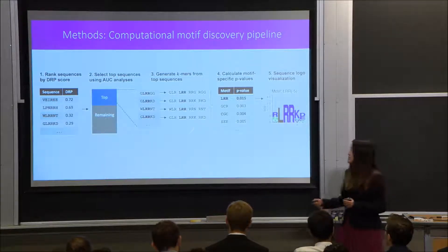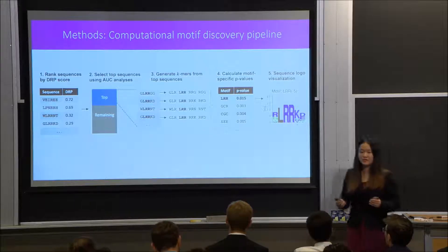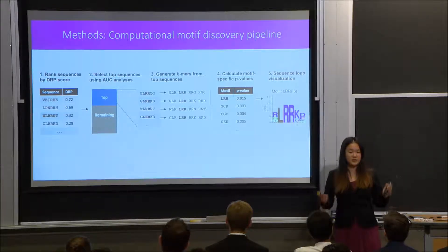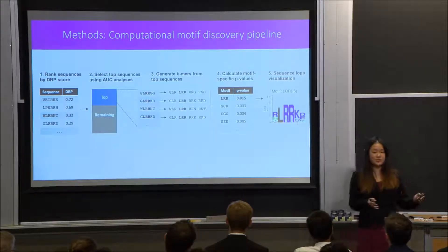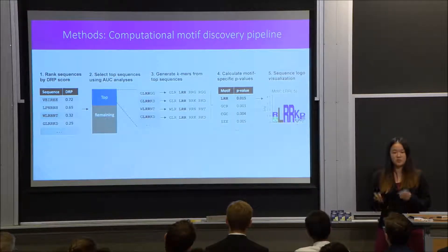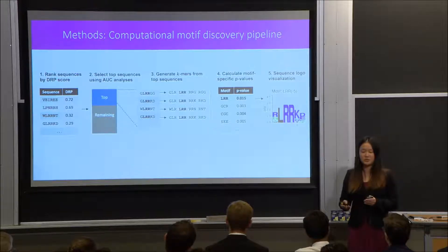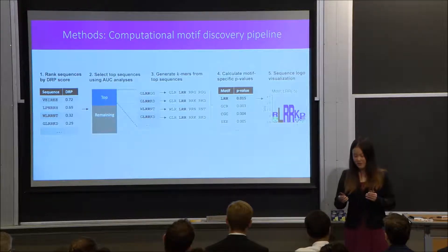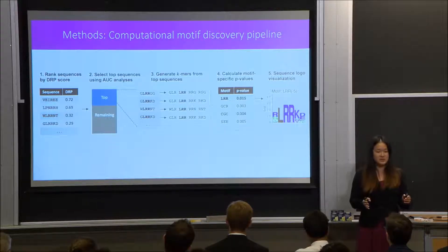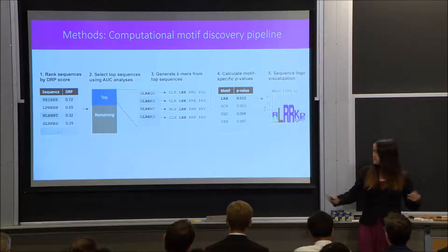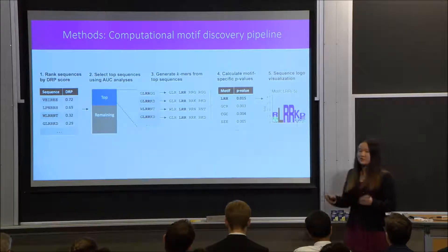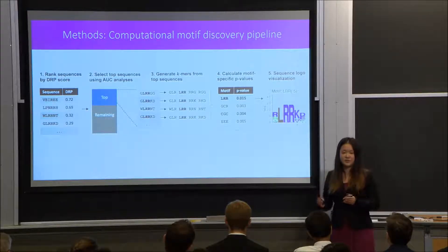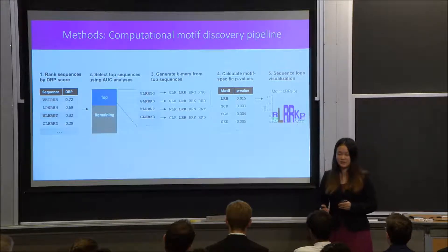Next, in step three, from these top 1,860 sequences, we generated all possible k-mers, which are basically subset sequences of length k. For each k-mer, we used the binomial survival function to determine an enrichment p-value, which tells us how enriched the k-mer is among the top sequences in comparison to the background distribution. We then applied the standard cutoff of 0.05 to determine the significant k-mers.